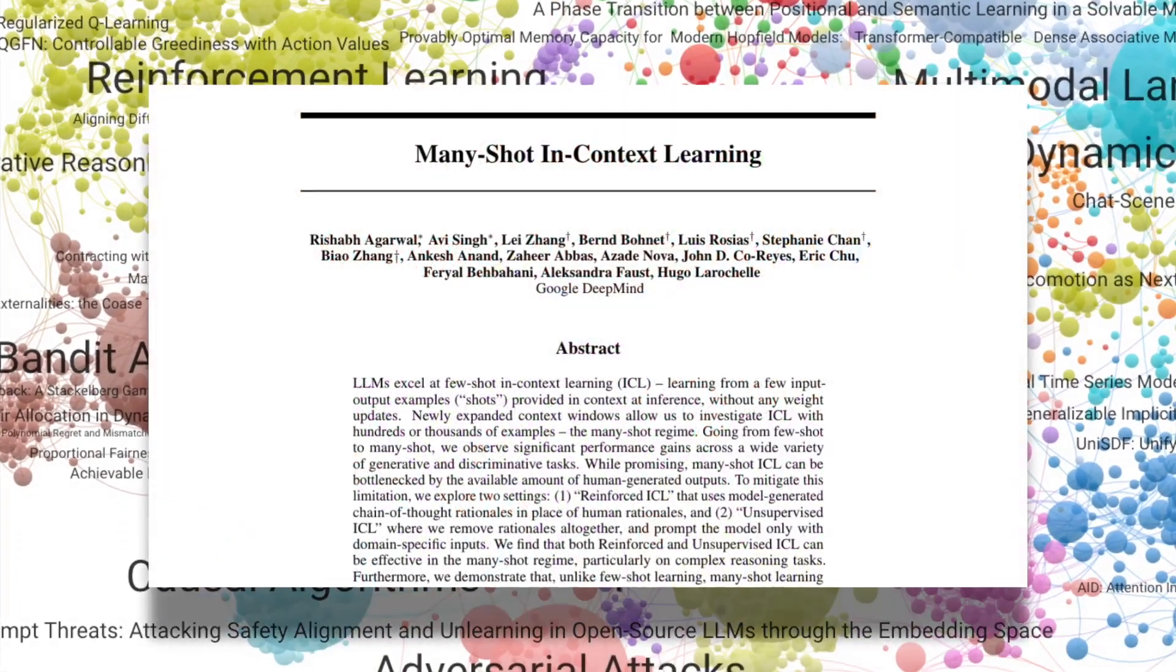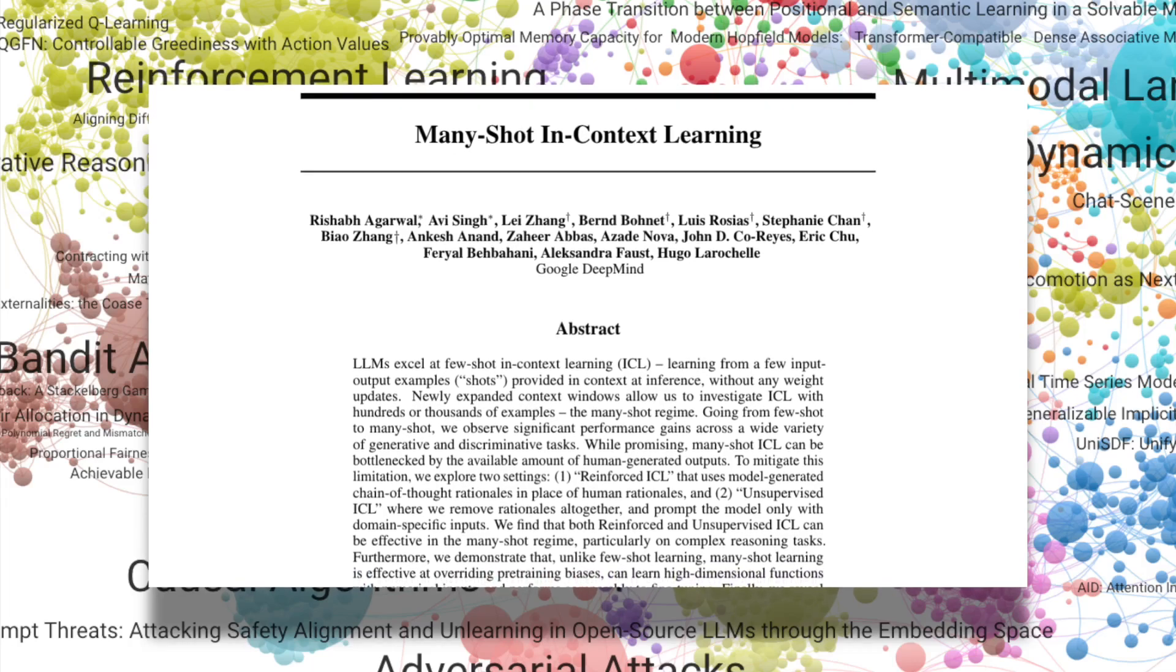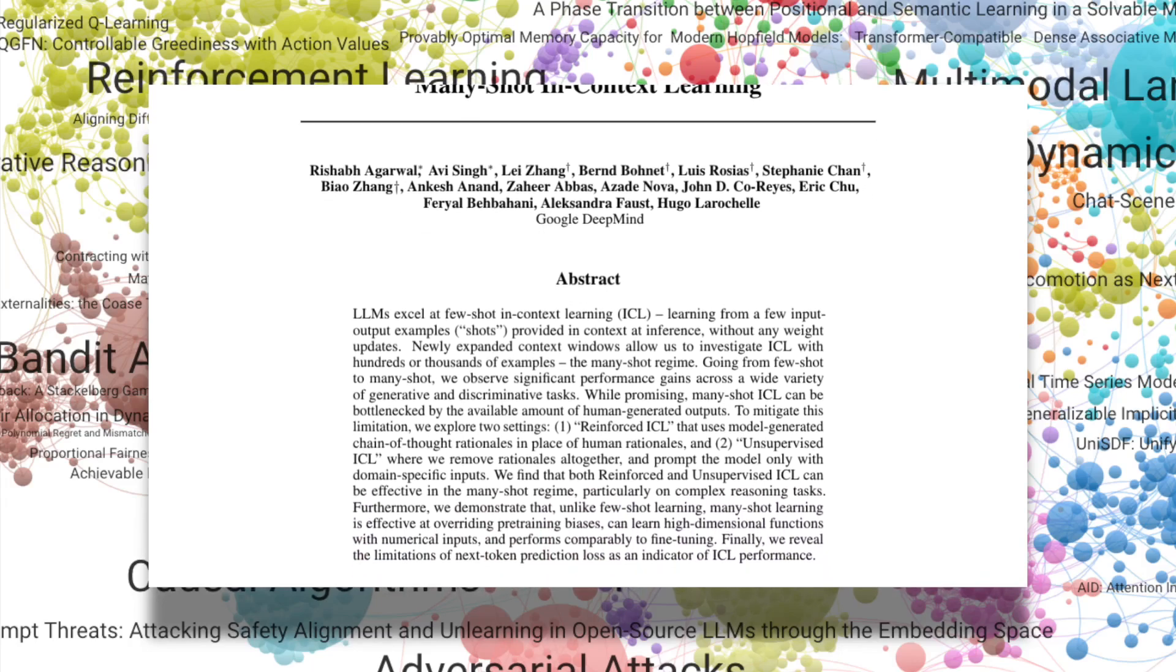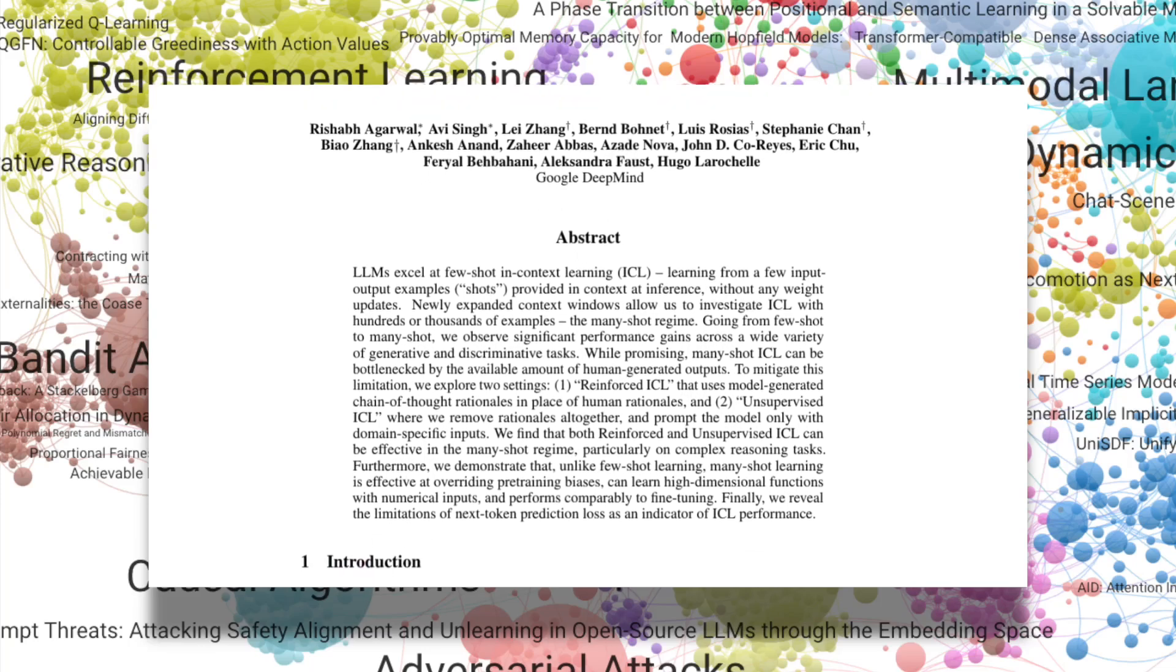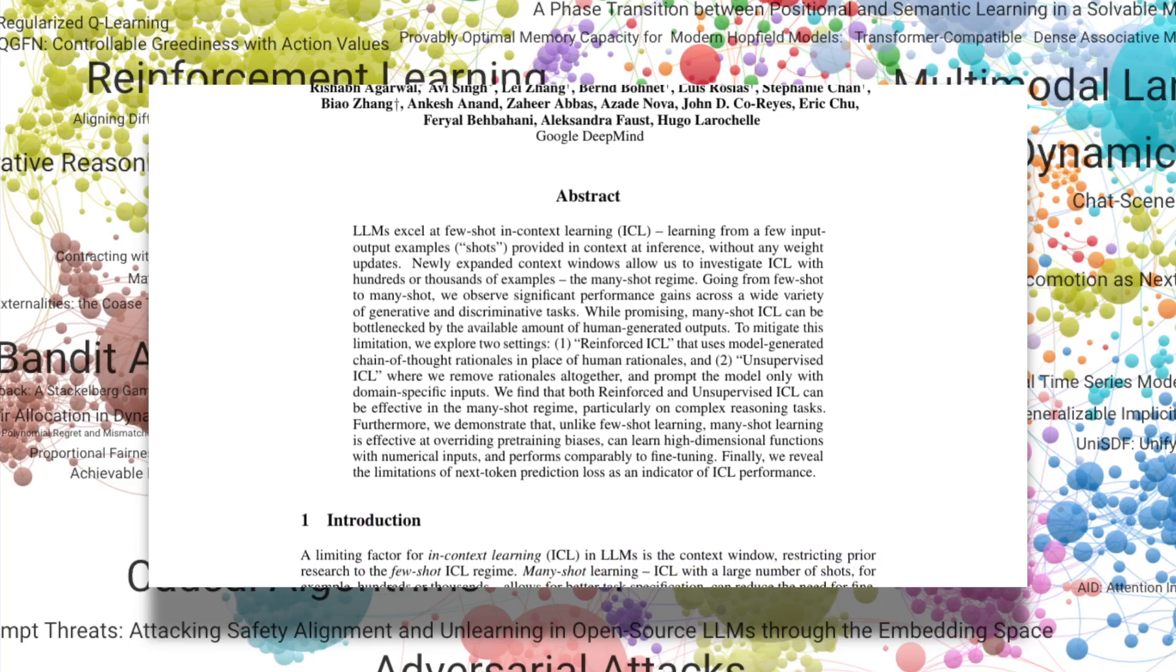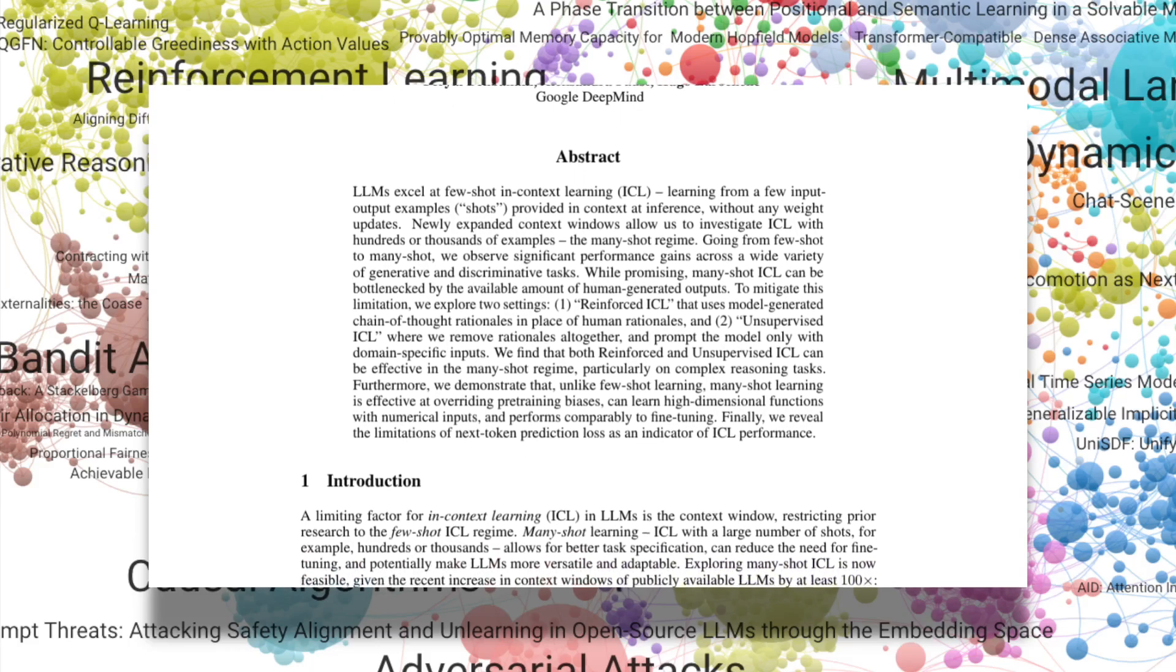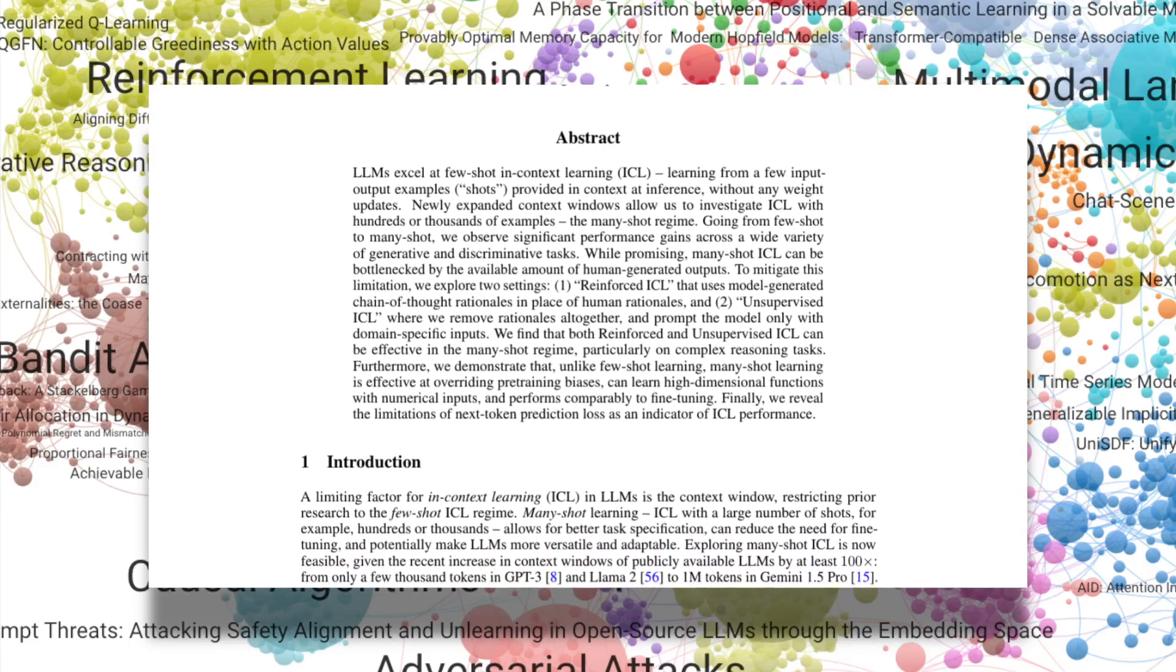Next, DeepMind's work on many-shot in-context learning demonstrated how to leverage Gemini's expanded context windows to incorporate hundreds or even thousands of examples. Their findings showed significant performance gains across various tasks, introducing techniques like reinforced ICL and unsupervised ICL, highlighting the potential of in-context learning to rival fine-tuning in certain scenarios.